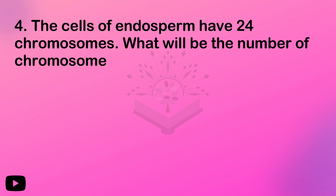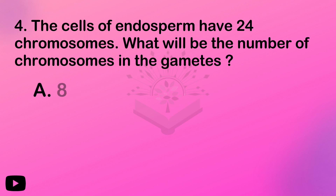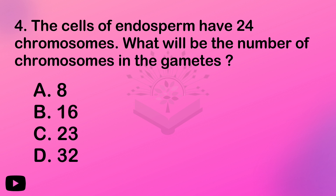Next question: the cells of endosperm have 24 chromosomes — what will be the number of chromosomes in the gametes? Now, you should know that endosperm is triploid — not haploid, not diploid, but triploid.